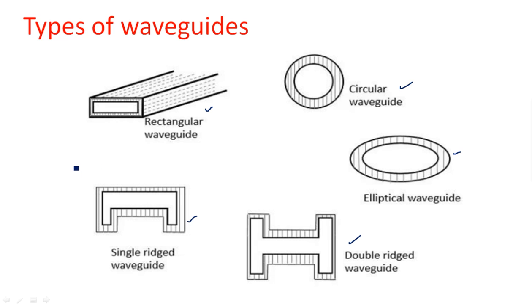Most commonly in microwave engineering laboratories for B.Tech students, rectangular waveguides are used. Rectangular waveguides are generally preferred for microwave communication — you may have seen these waveguide components in the laboratory. Inside, walls are coated with aluminum. For laboratory and original communication purposes, aluminum or copper is preferred; gold is rarely used. These are the different types of waveguides. Thank you.